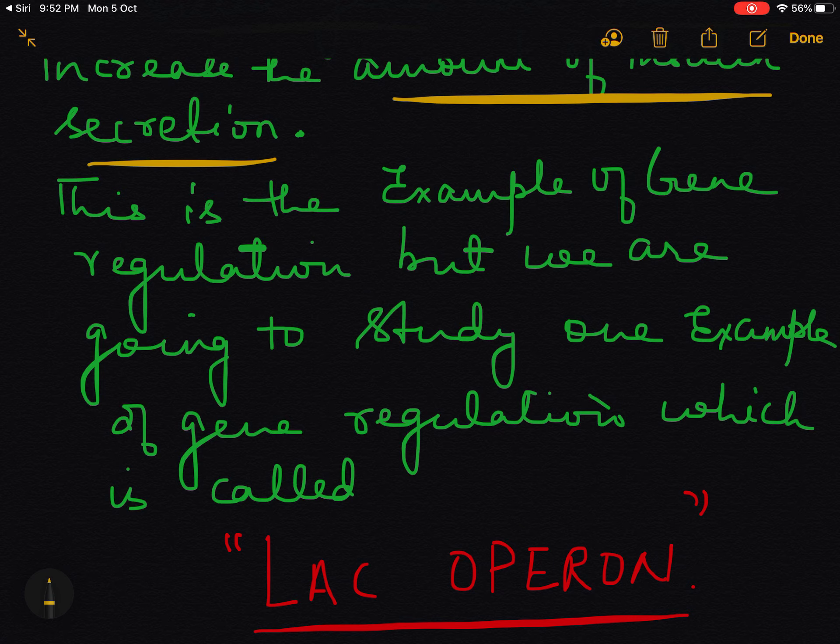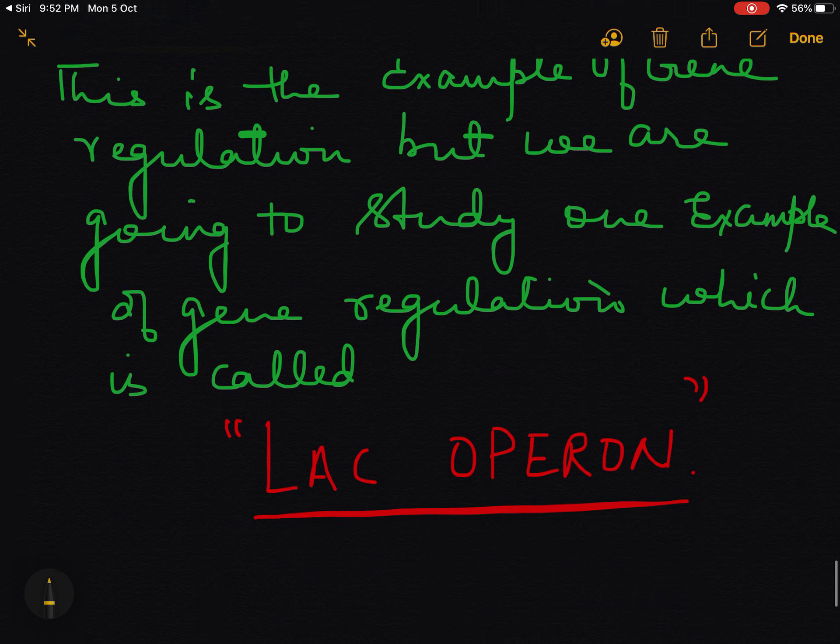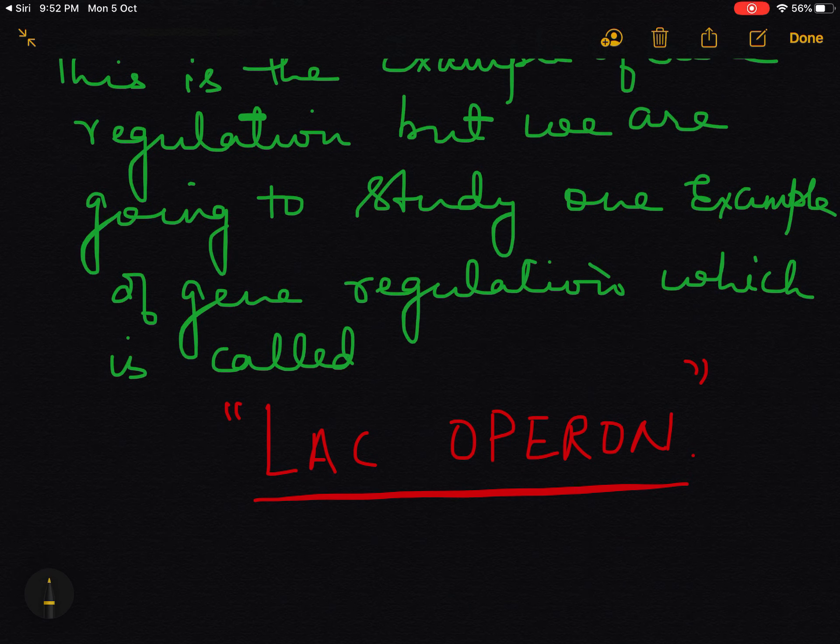I hope you have understood what is gene regulation. This is an example of gene regulation. But children, in your NCERT we are supposed to talk about a gene regulation mechanism of lac operon. There are many gene regulations in the body, but in NCERT the example of gene regulation taken is lac operon. In the next video, I will be giving you a detailed description of lac operon.